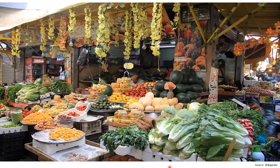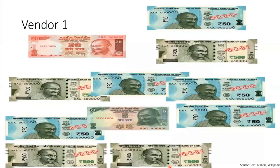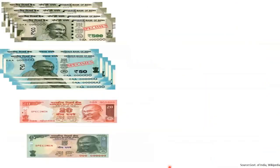You would have gone to such markets. Have you ever seen the cash boxes of these shopkeepers? Let's see a few samples of cash boxes of these vendors. Vendor 1 — can you find the total value? Now, let me help you. Here is a proper arrangement. Now let's calculate.